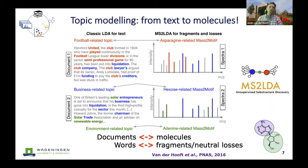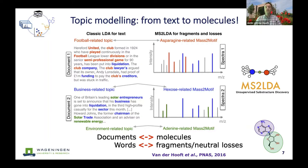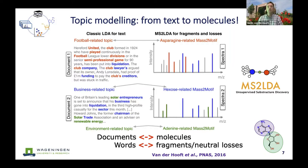We can recognize different topics in one document and the same topic in different documents. If we think about substructures and molecules, it's exactly what we want: molecules can consist of multiple substructures, and the same substructure can be reused in different molecules. In the molecular world, the documents become the molecules and spectra, and the words become the fragments or neutral losses.